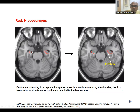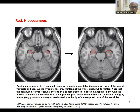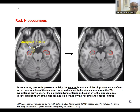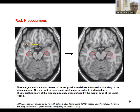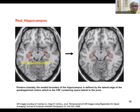Start from the temporal horn; the posteromedial part should be contoured. Go superiorly, and anteriorly the amygdala should not be contoured. Continue going up until you reach what is called the quadrigeminal cistern. When the quadrigeminal cistern finishes, your contour finishes.